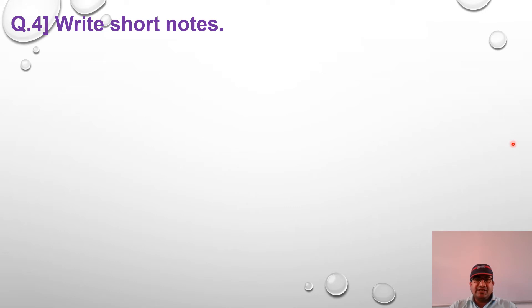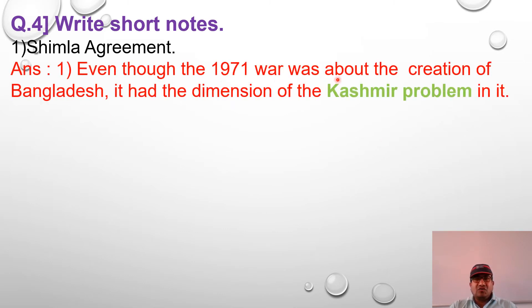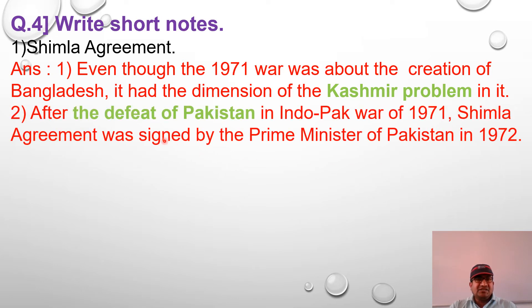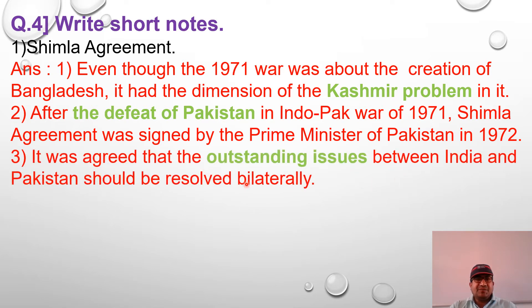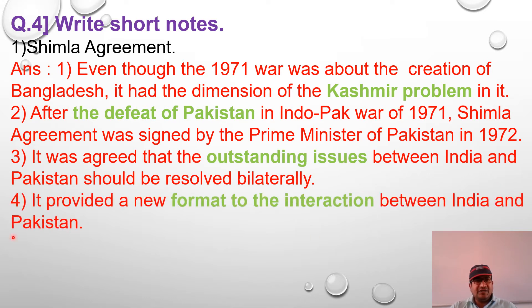Write short notes for two marks. Simla Agreement: Even though the 1971 war was about the creation of Bangladesh, it had a dimension of the Kashmir problem in it. After the defeat of Pakistan in the Indo-Pak war, the Simla Agreement was signed in 1972 by the Prime Minister of Pakistan. It was agreed that outstanding issues between India and Pakistan should be resolved bilaterally. It provided a new format for interaction between India and Pakistan, through which both countries can talk to each other directly.